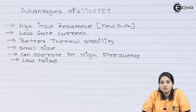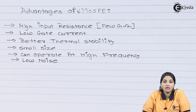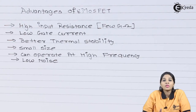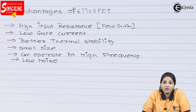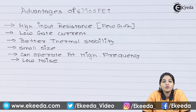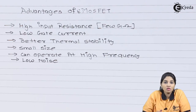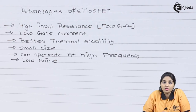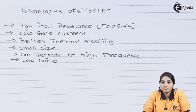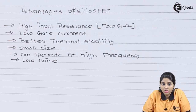Moving towards the advantages of Enhancement MOSFET, the first important feature is that it provides high input resistance in the range of few gigaohms. Because of the silicon oxide layer present between the gate and P substrate or N substrate, it provides high input resistance or high input impedance for a MOSFET device. As the input resistance offered by the device is very high, the second advantage is that it requires less amount of gate current.